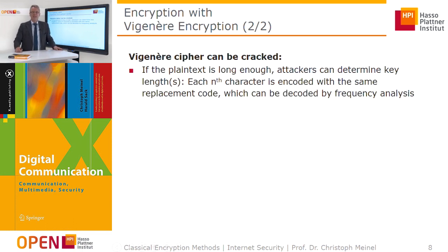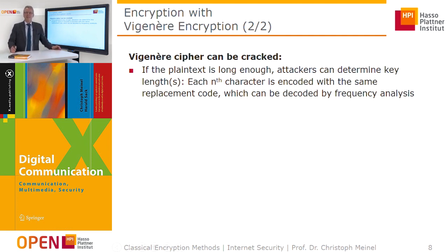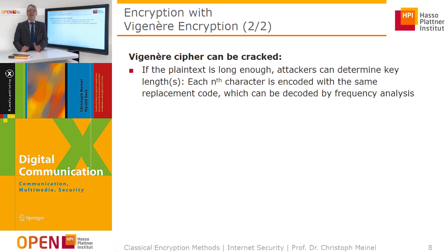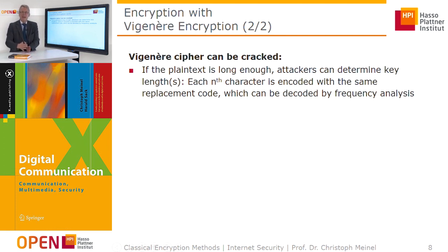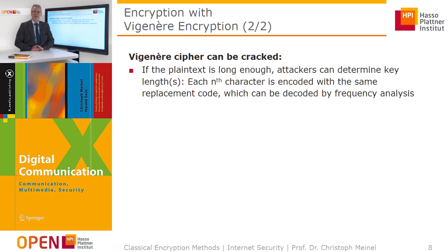The Vigenère cipher can also be cracked. If the plain text is long enough, an attacker can determine the key length, because each nth character is encoded with the same replacement code. If the keyword has length n, then the letter at position n plus 1 has exactly the same shift as the letter at position 1. By finding this pattern, the attacker can crack the encryption and decode the cipher.